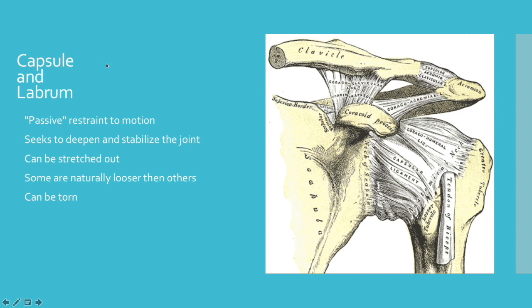Next thing we're going to talk a little bit about are the capsule and the labrum, and we're going to refer to these oftentimes as a passive restraint to motion. And what that means is that your capsule and labrum do not contract. They're not like a muscle in that regard. They're not actually shortening and providing stability to the shoulder joint the same way that the rotator cuff does.